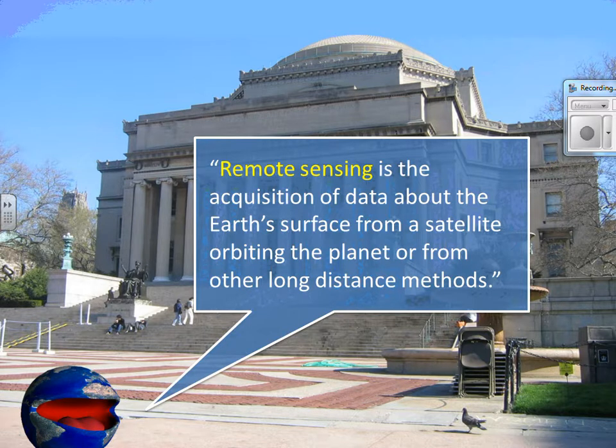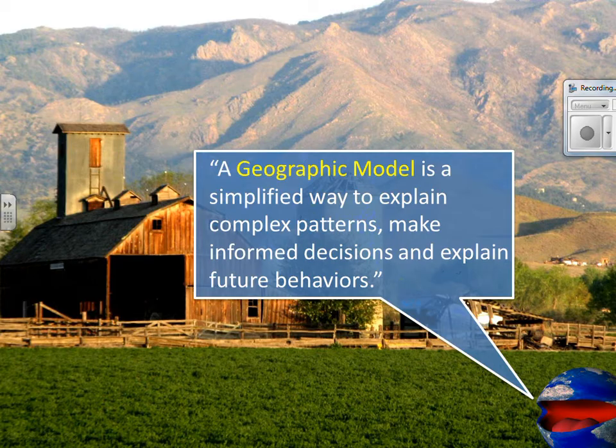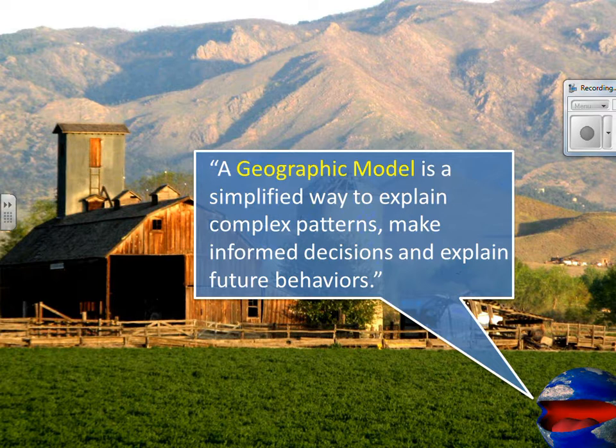Remote sensing means you're sensing something and making an analysis of what's happened from a remote location. A geographic model is a way to try and explain a pattern that's happening on the Earth — it may be used for preventative measures in the future, or just to explain why something happens. We look at a lot of geographic models. You will have to memorize the model, the theorist who came up with it, and understand the parts or stages of the model.